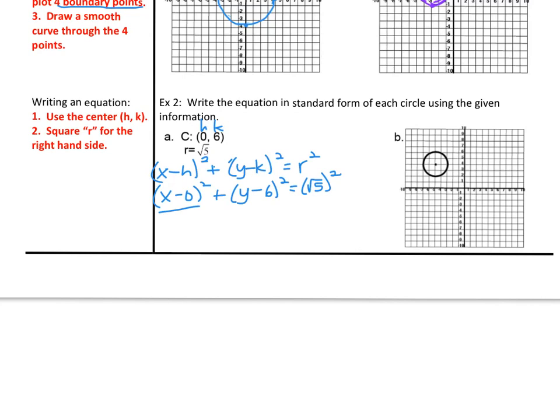We can simplify that. If we have x-0, that's the same as just x². y-6 will keep in that parenthesis. The square root of 5 squared, the square root cancels with the squared, leaving us with just 5. That's all you do to write the equation of a circle with given information.